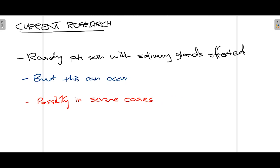Currently, not much patient data is available to fully characterize how the salivary glands are affected, but the mechanisms have been hypothesized — including how the salivary gland is affected, the different clinical signs and symptoms, how to treat it, and how to test the patient. Salivary samples can be used as an adjunct to diagnosing coronavirus infection.